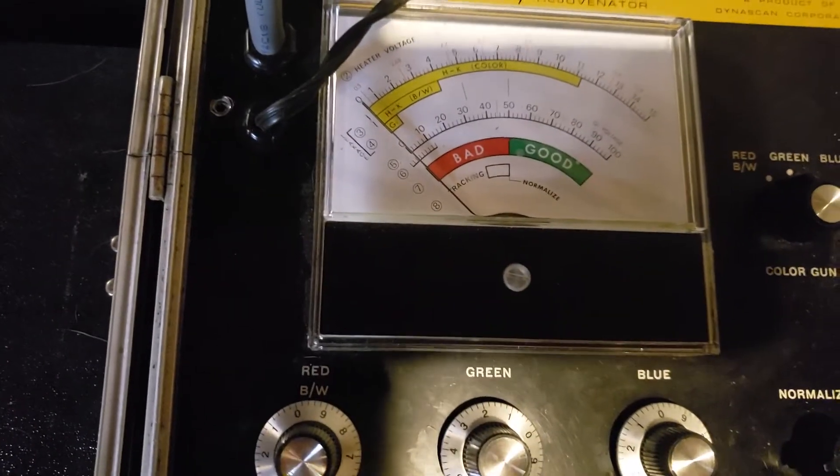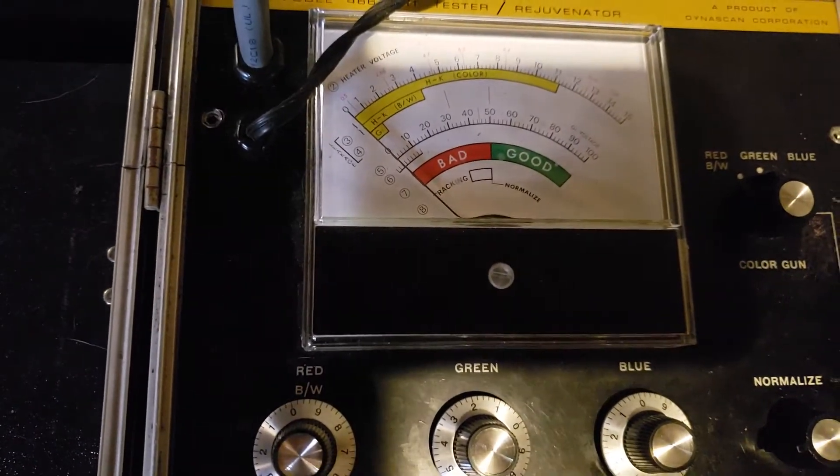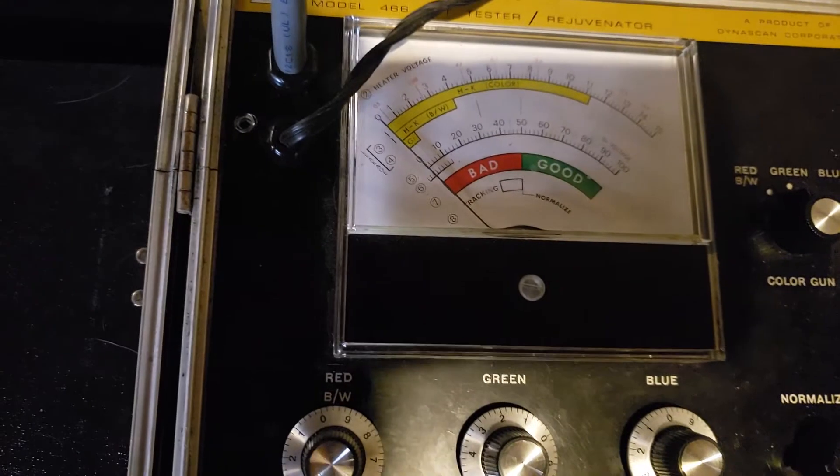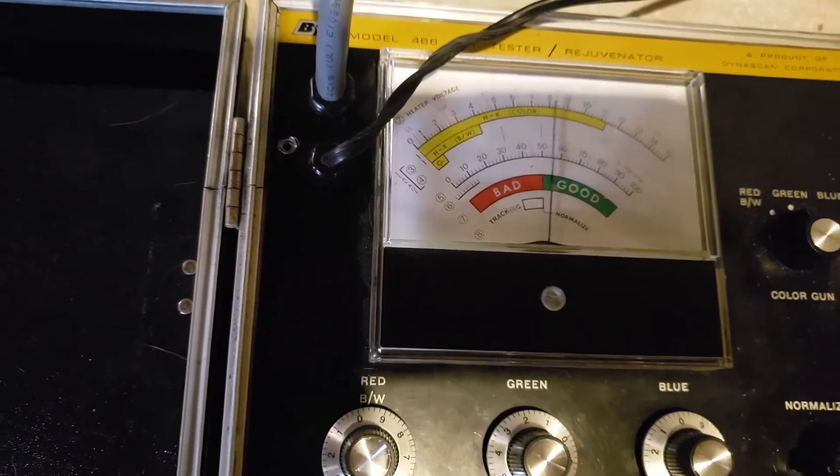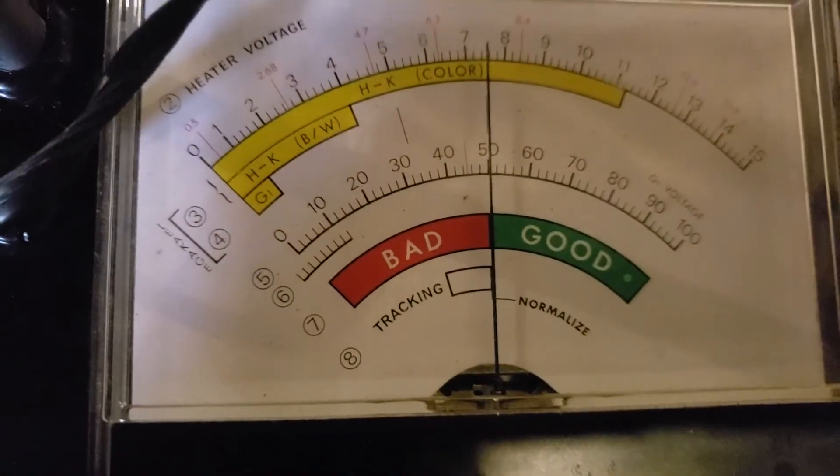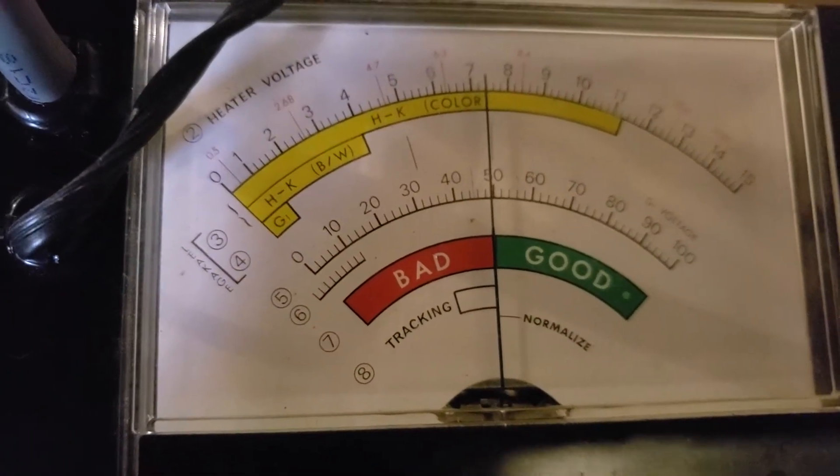G1 leakage test - sweet, no leakage. Set G1 voltage, that is 50 volts. Looks like I'm just a little bit off, there we go.